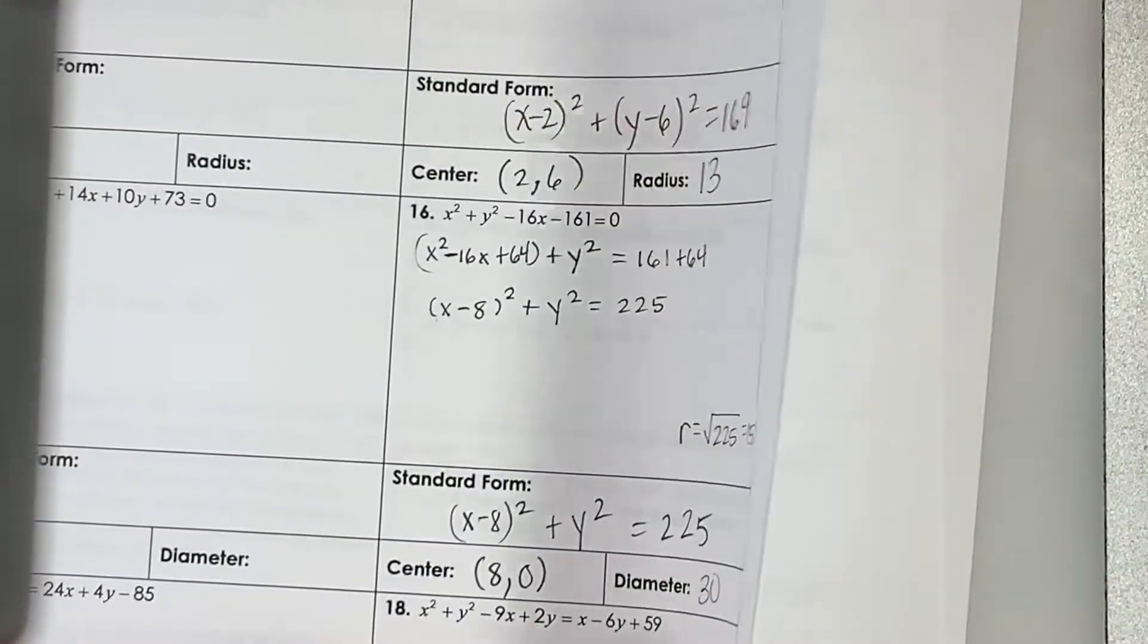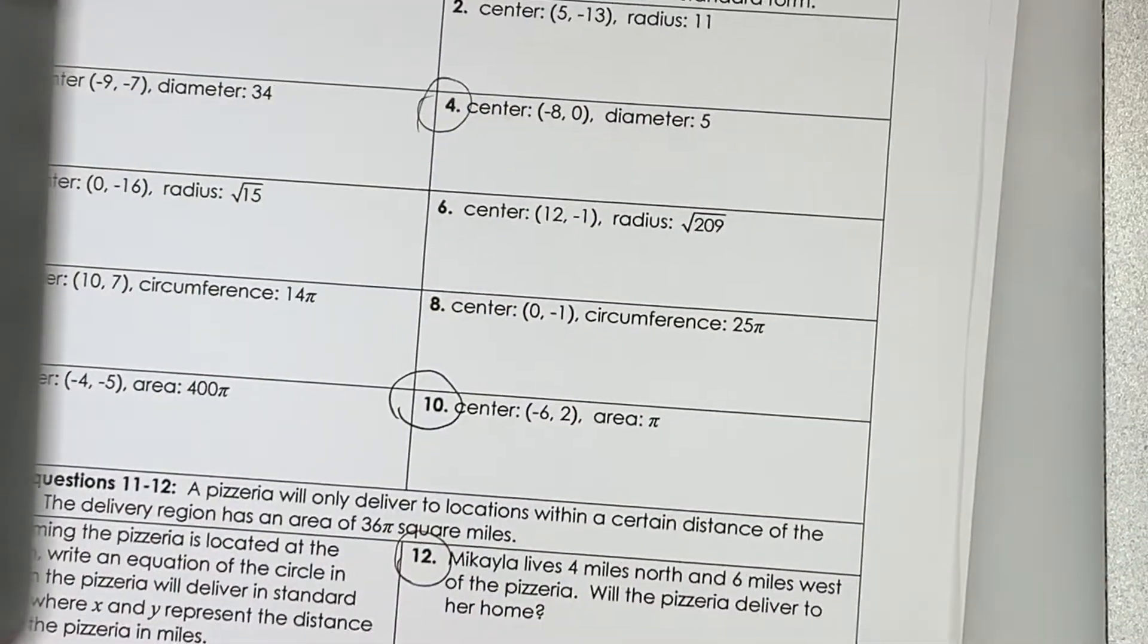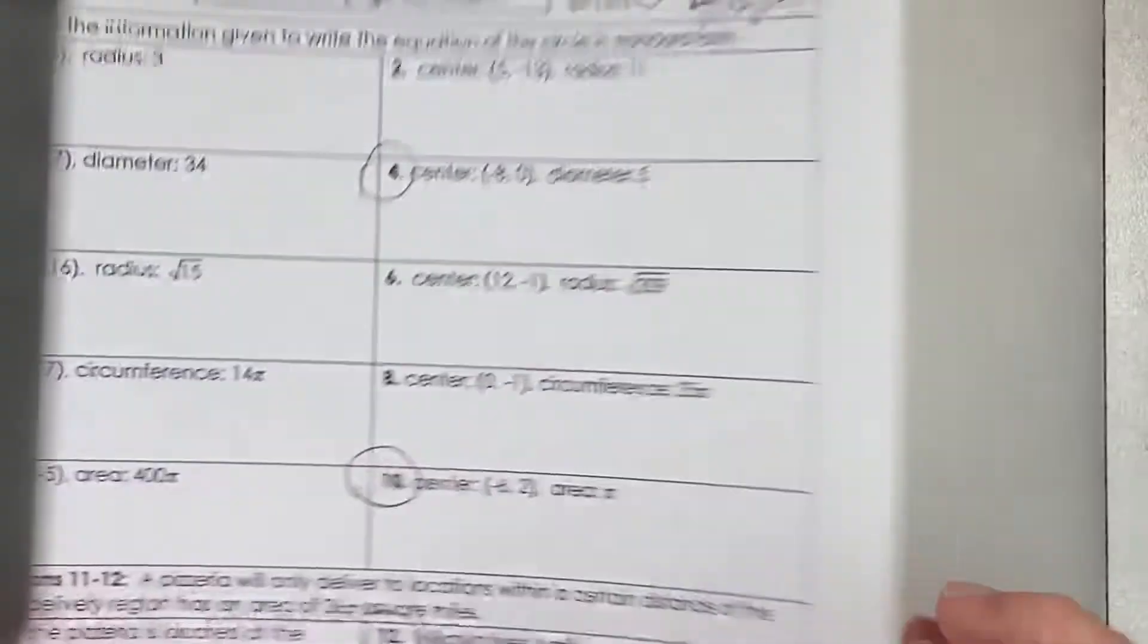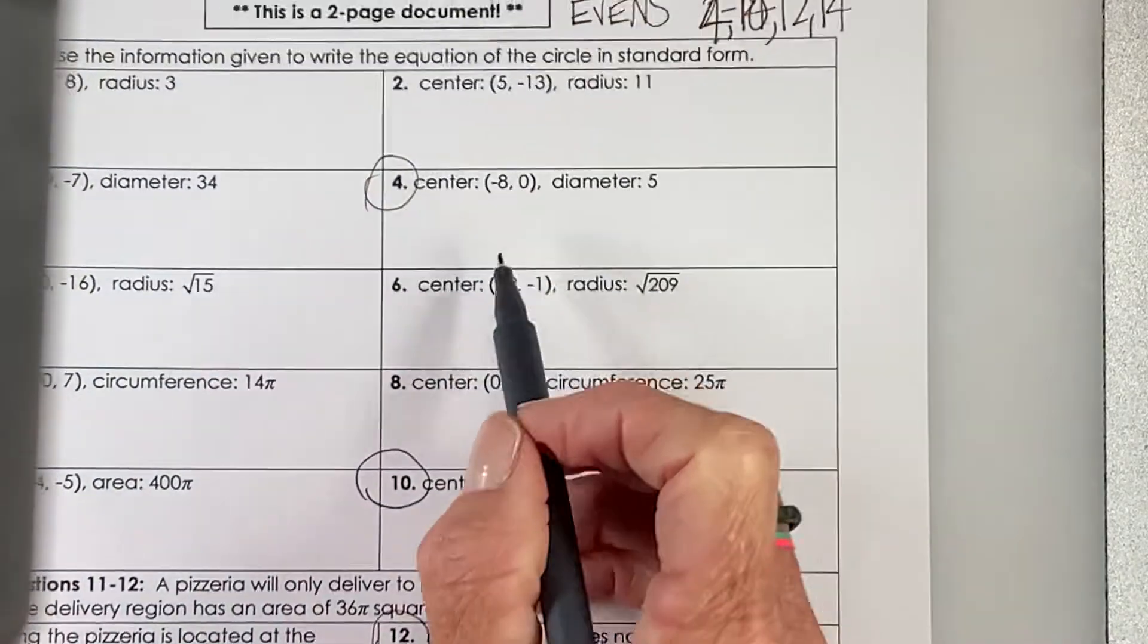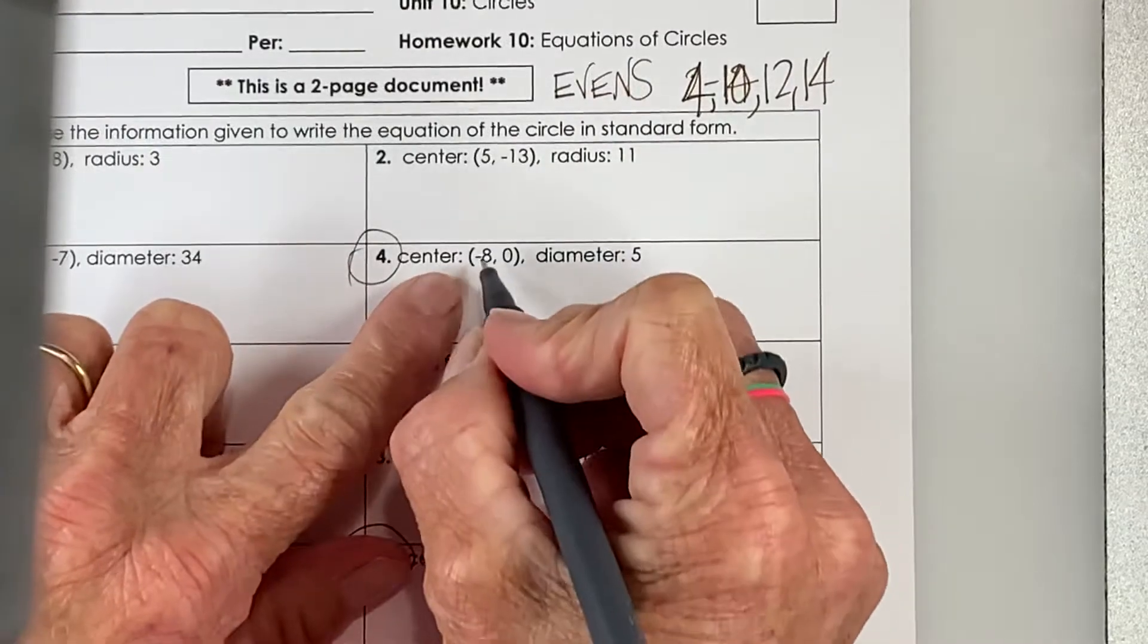All right, on the next page of this assignment, you only had to do these four, and we're simply going the other way. So given this information, we're going to write the equation of the circle.